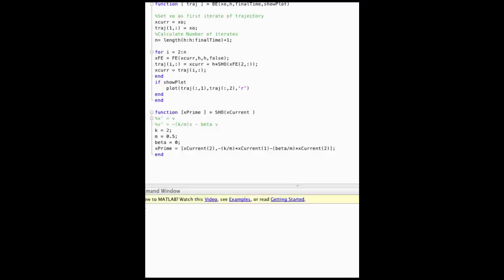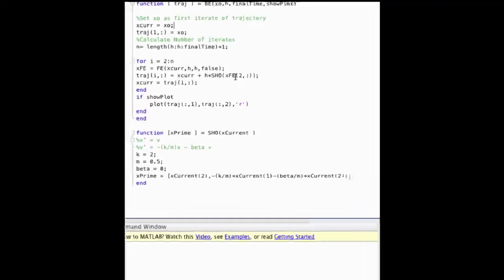Question 2 asks to write backward Euler. This is also called implicit Euler, as it is an implicit solver. My implementation is a MATLAB implementation that takes the exact same inputs as forward Euler did, namely an initial condition, a step size, a final time, and this plot parameter. My backward Euler code is identical to my forward Euler code, except for this one key step.